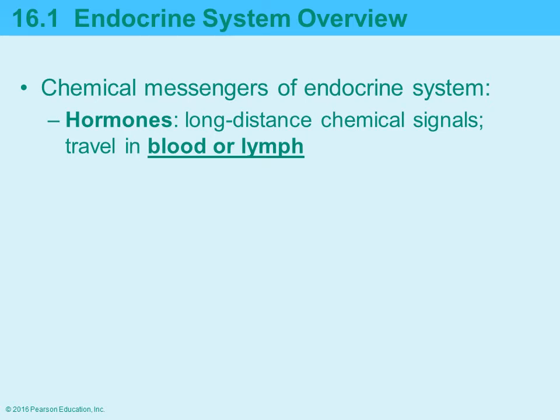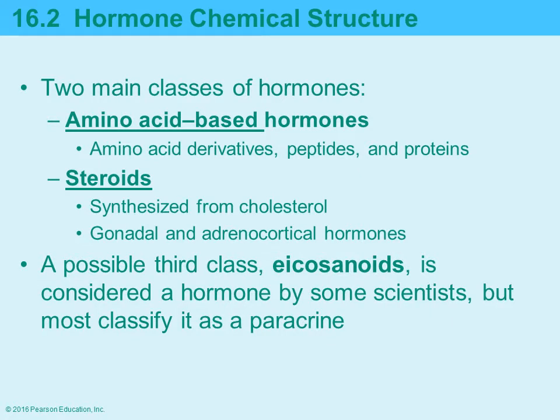Hormones are chemicals released from the gland — think of them as chemical messengers. They travel in the blood, and some also travel in the lymph, until they reach their target cell, where they bind to a receptor and trigger the appropriate response. Broadly, there are two types or classes of hormones: amino acid-based hormones, sometimes called protein hormones, and steroids.